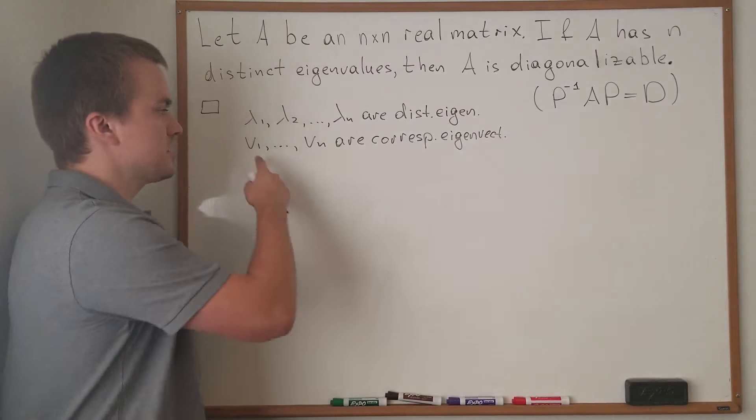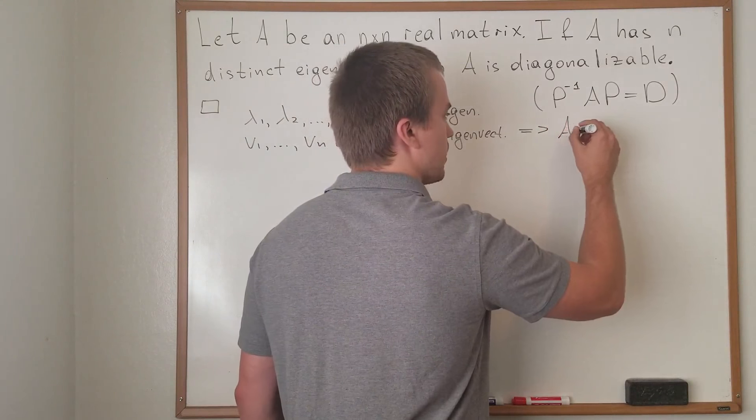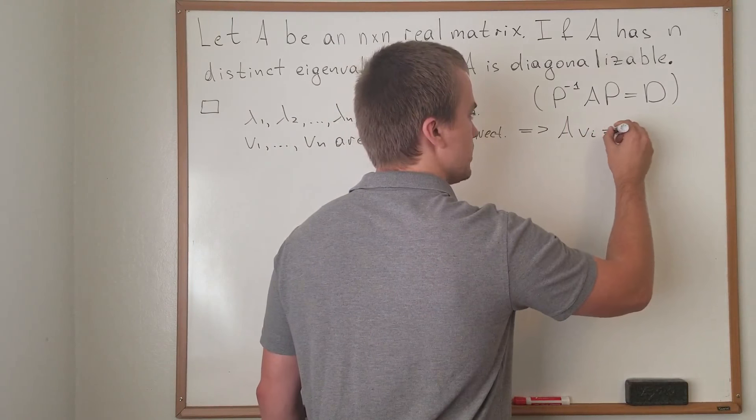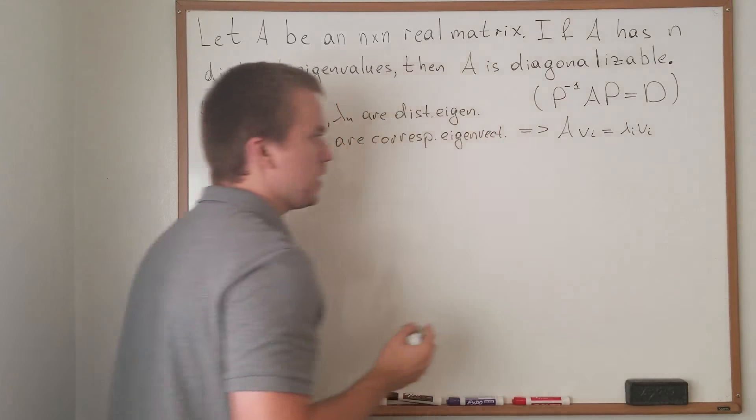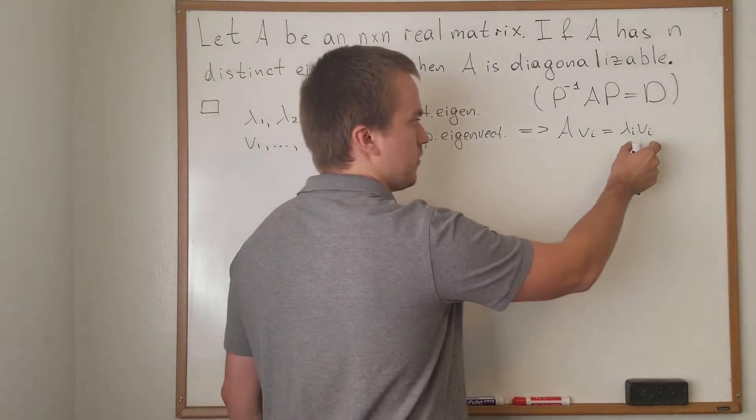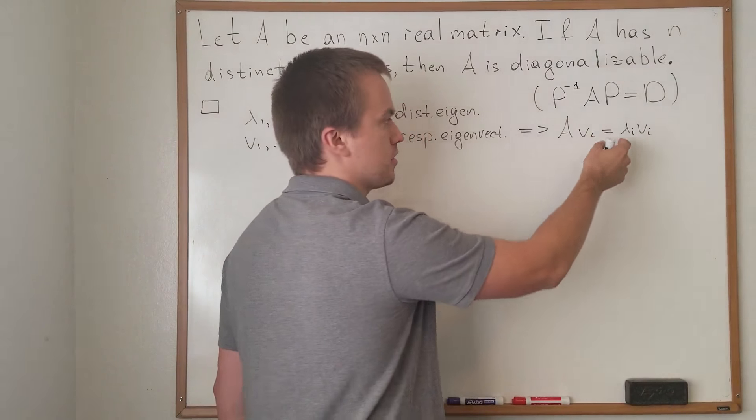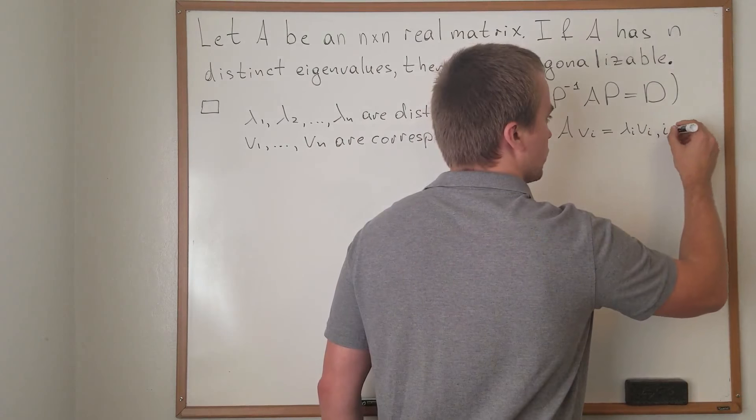What does it mean that this is an eigenvector? By definition of eigenvector, it means that A of Vi equals lambda i times Vi. So if we're going to take our matrix and act on our eigenvector, we're going to get a vector which originally is parallel to Vi, where i goes from 1 to n.